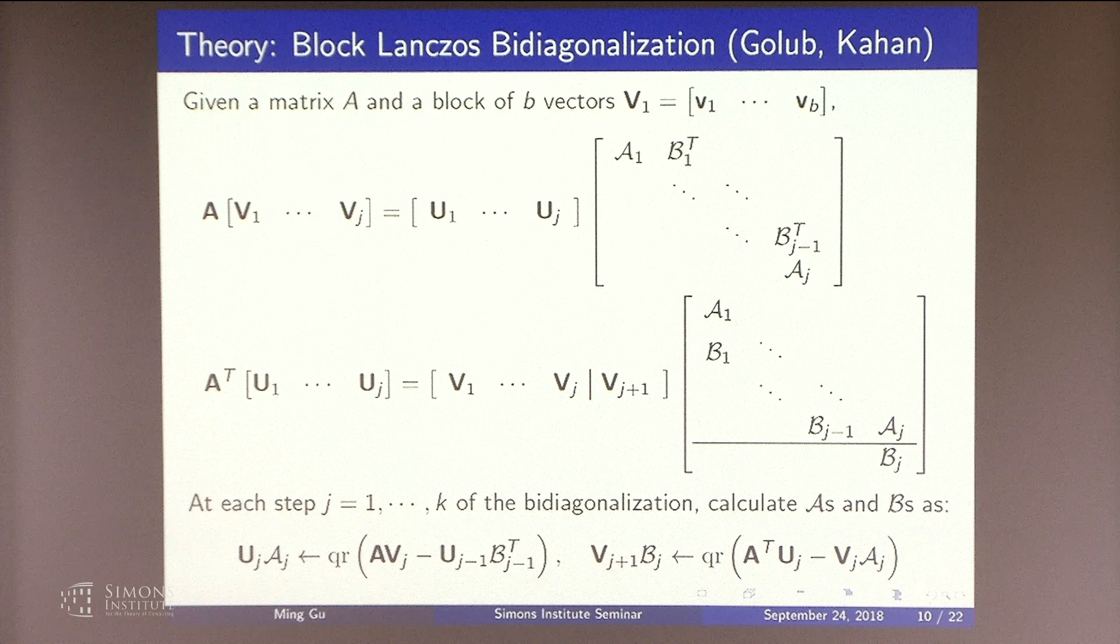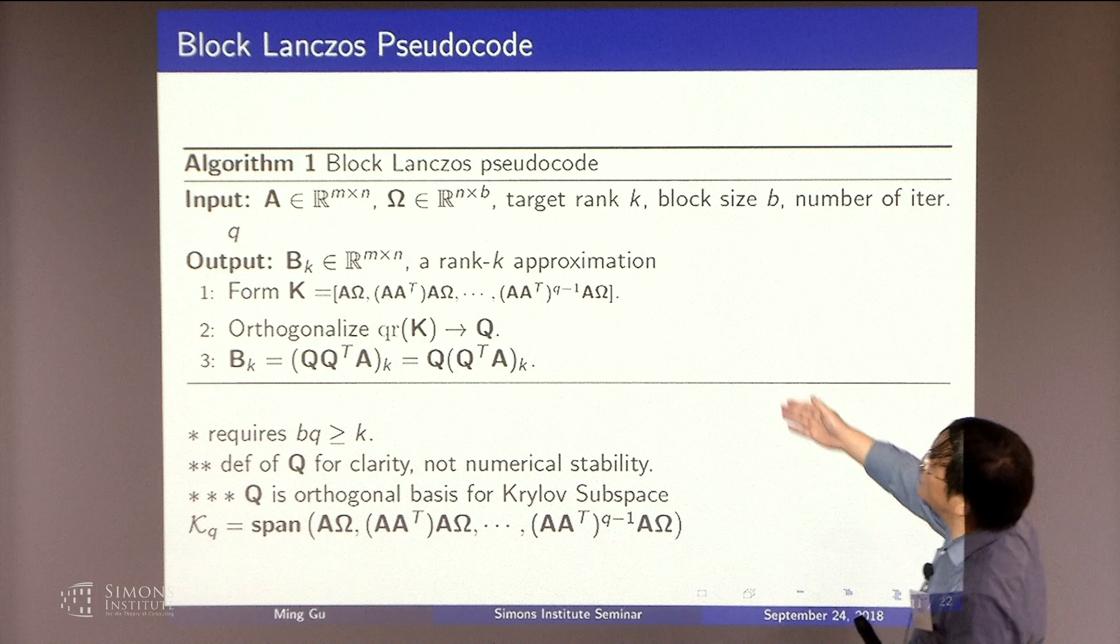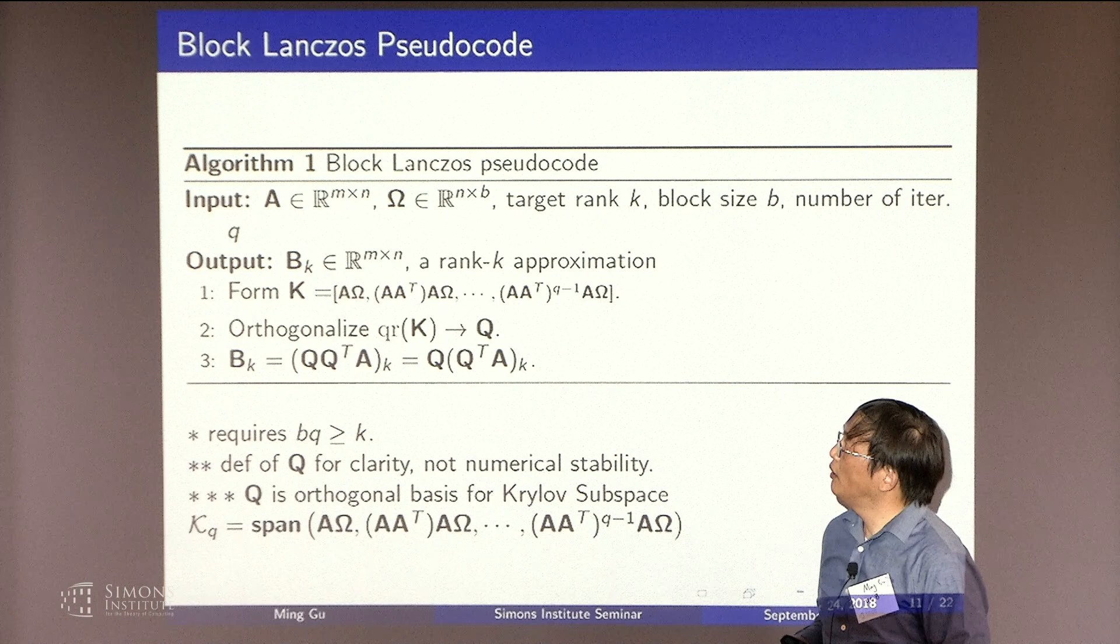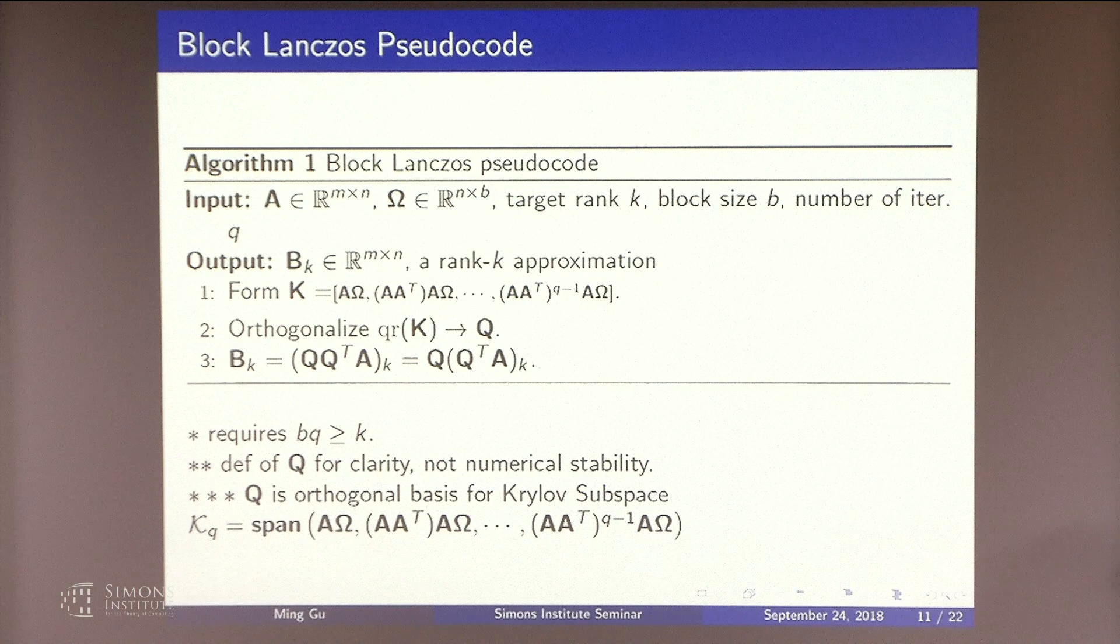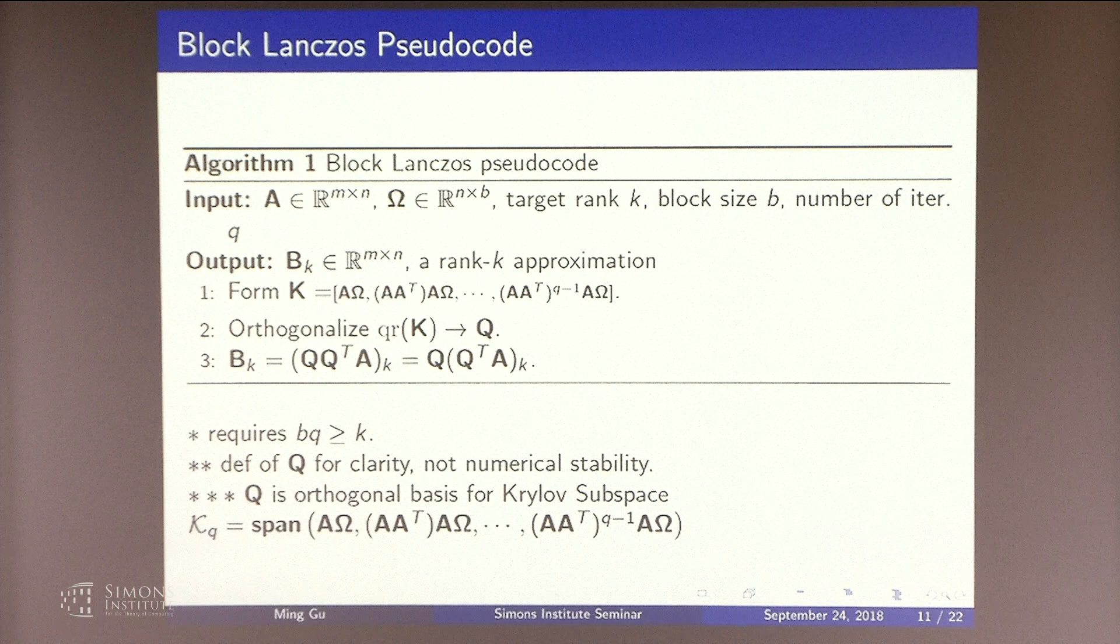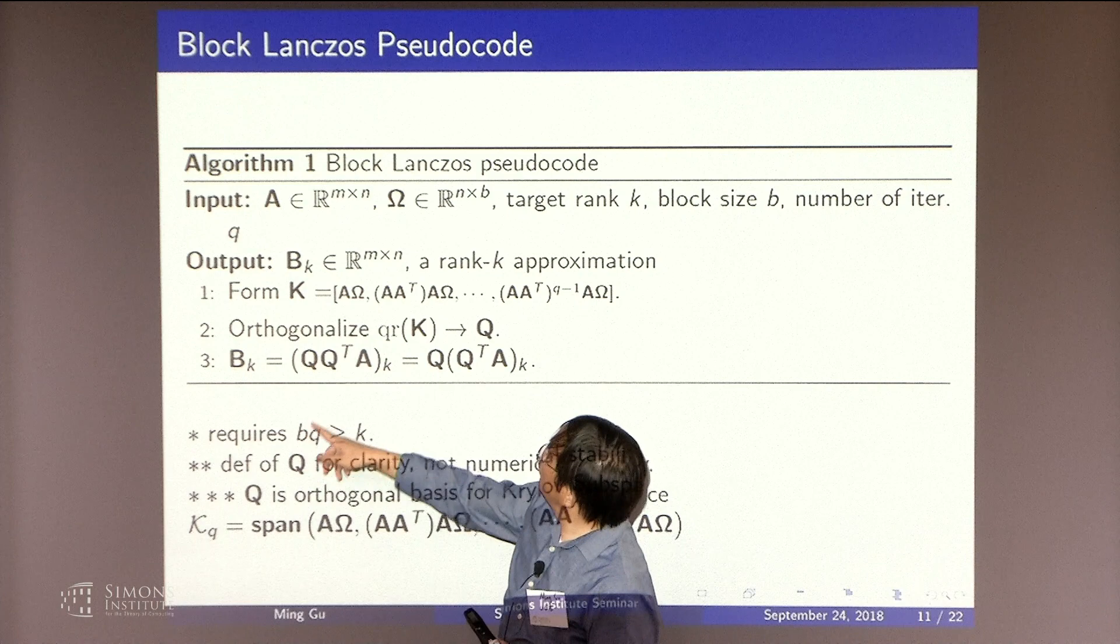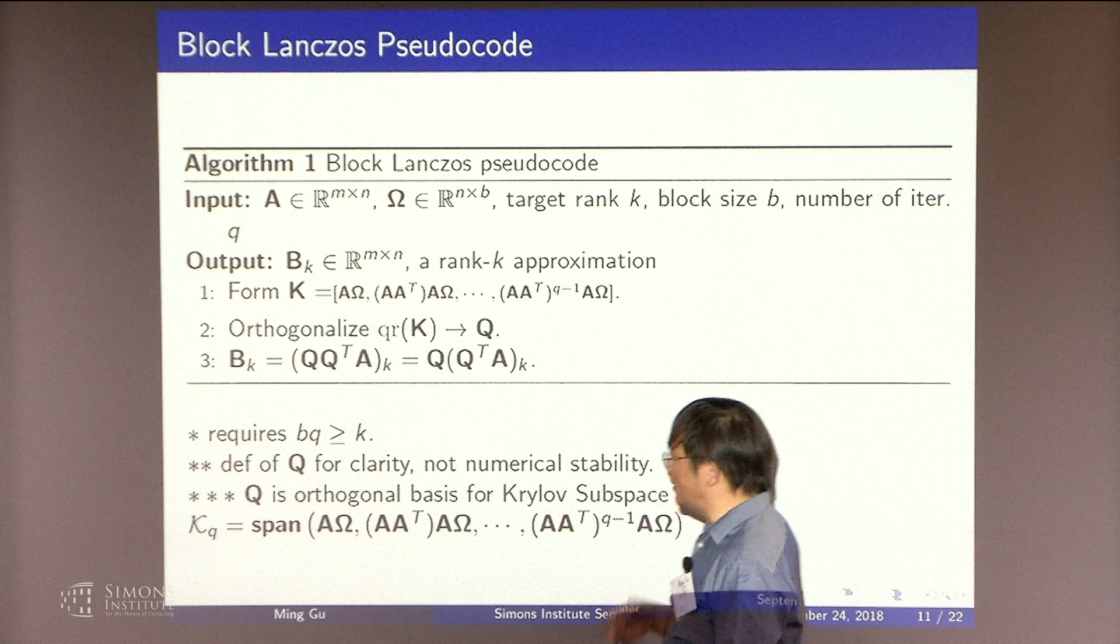So if you want, if you kind of come up with a mathematically equivalent but easier to understand version of this, this is what it is. You're basically calculating the orthogonal space, orthogonal basis of this subspace. Columns of the summation of K. You don't calculate this way, but mathematically this is what it is. You get the basis for this matrix, and then you do truncated SVD. So there's a few things to be said. The b is the number of columns in your omega, which is the initial matrix. And you're looking for a rank k approximation. So b times q, q is the number of steps. That needs to be bigger than k. That's the only thing that you require for this to work in theory.